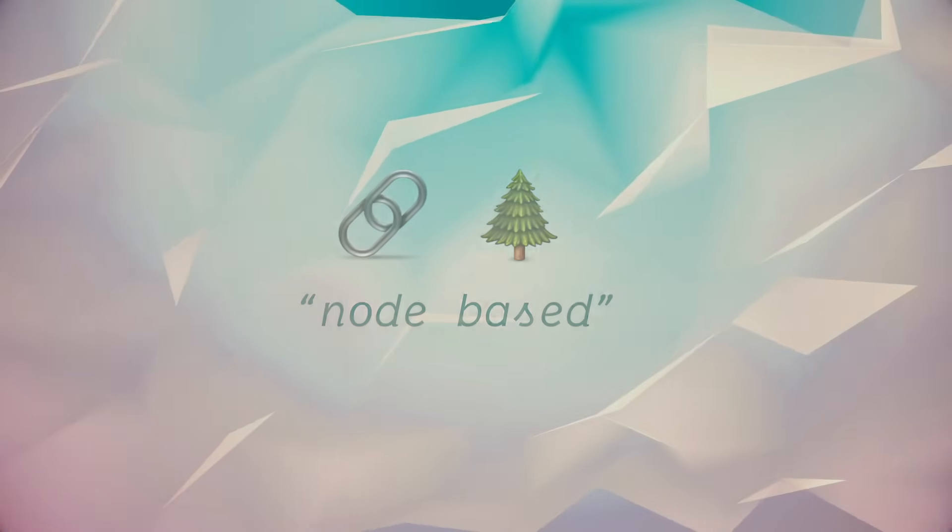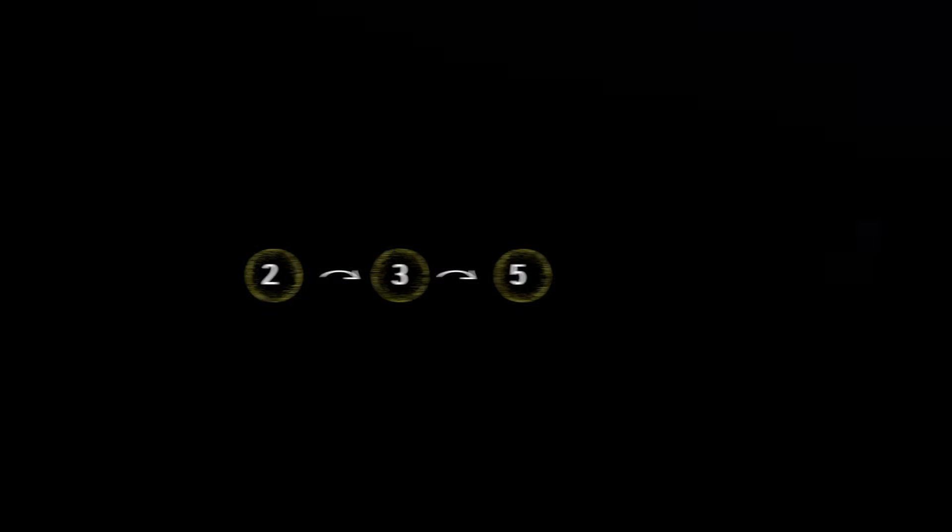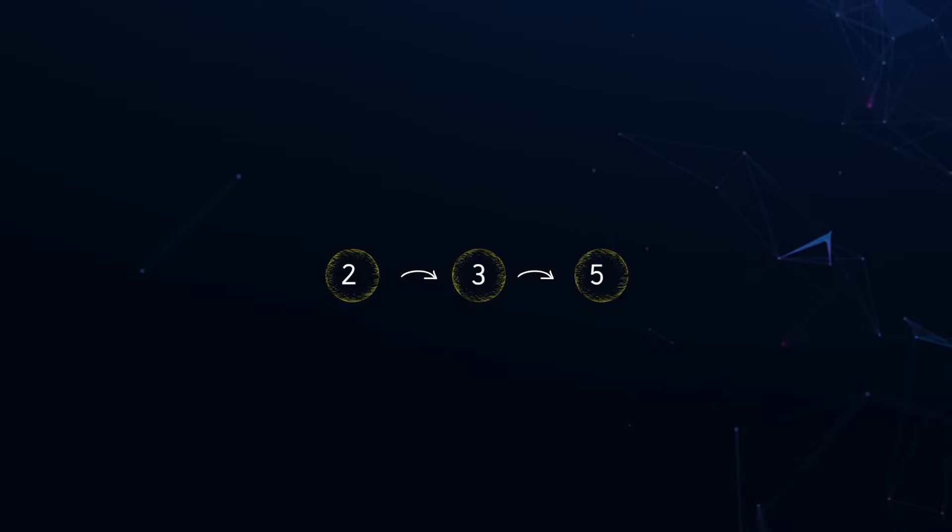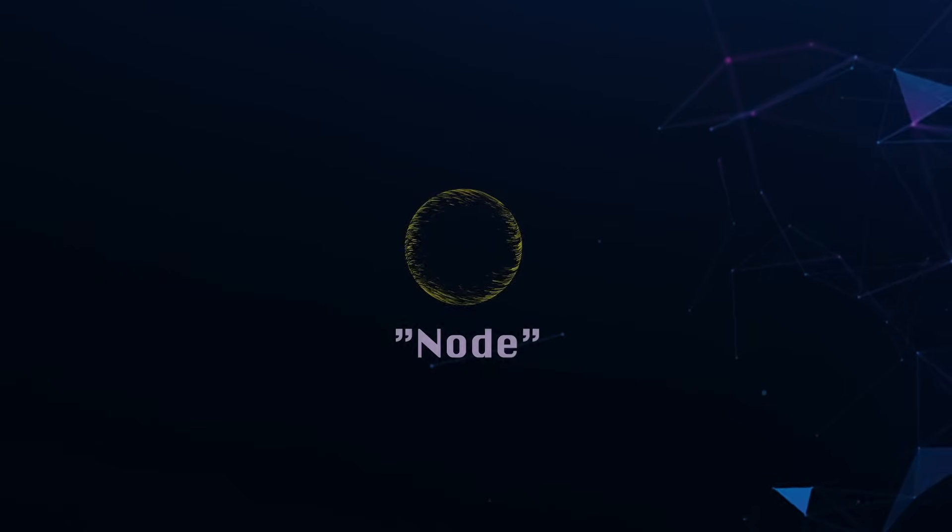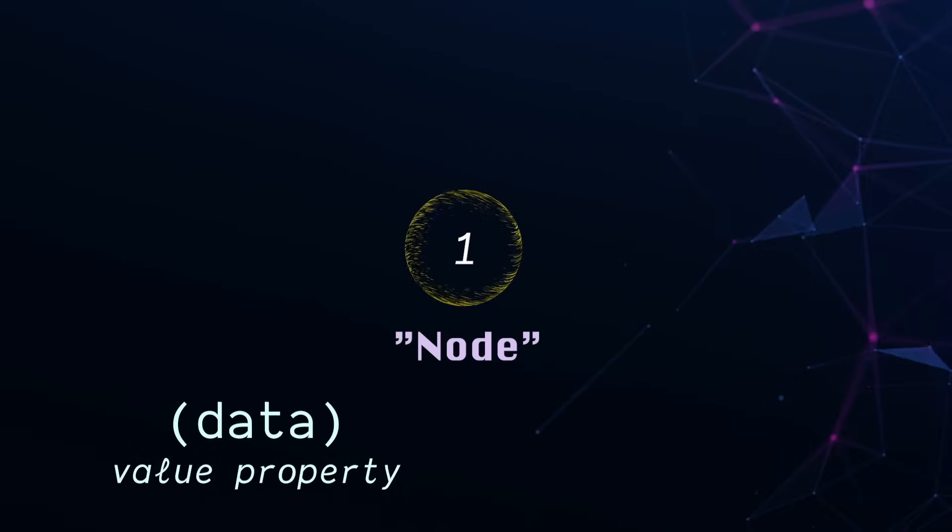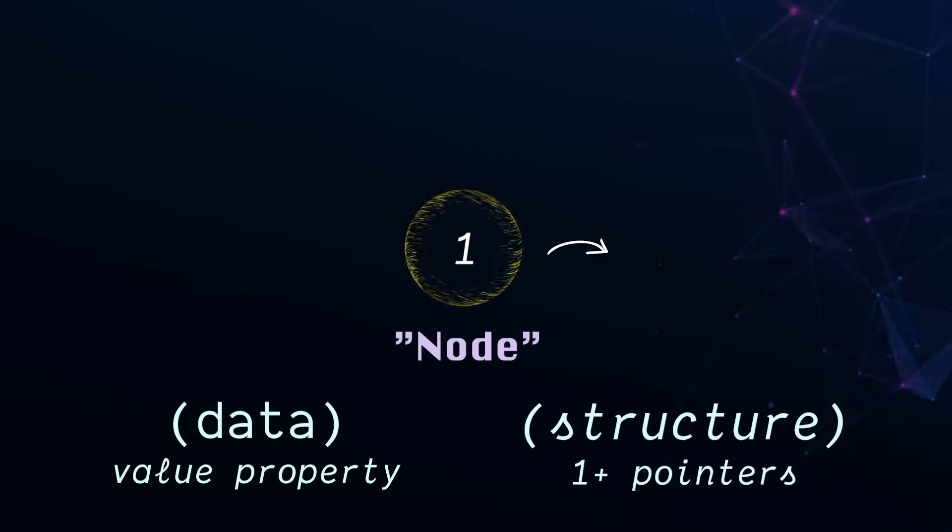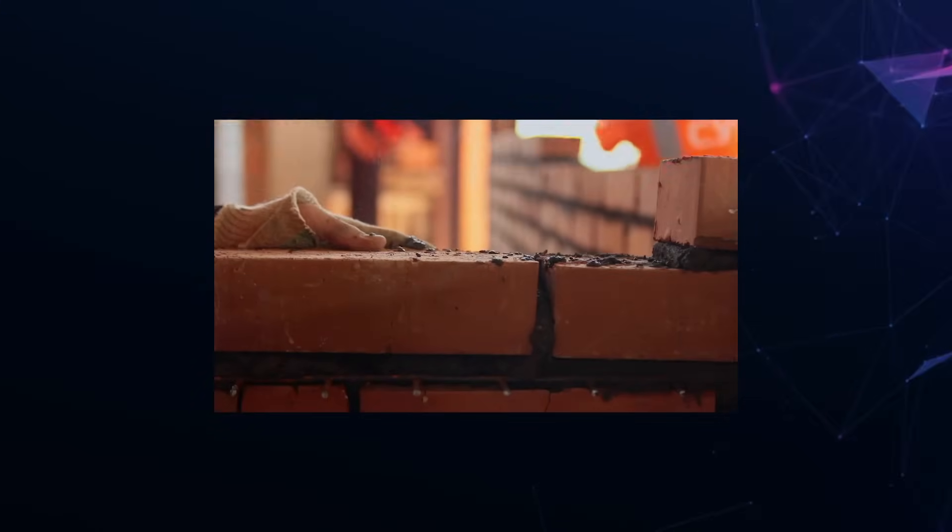By now, we're quite familiar with creating list nodes with a value property and setting their next pointer. You might be surprised to hear this, but a ton of data structures have these very same components. That is, a node containing a value property and one or more pointers. So think of nodes as the bricks that we're using to build different structures.